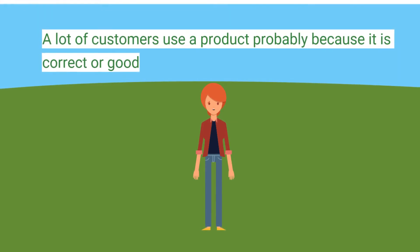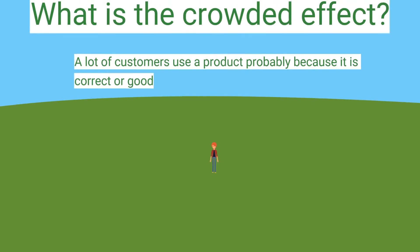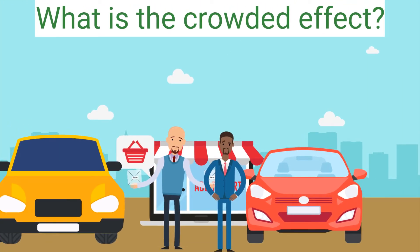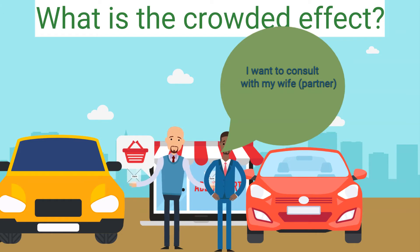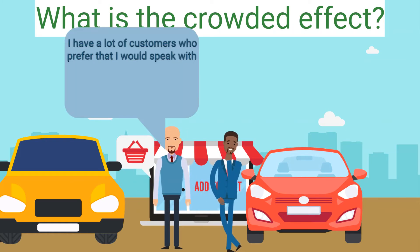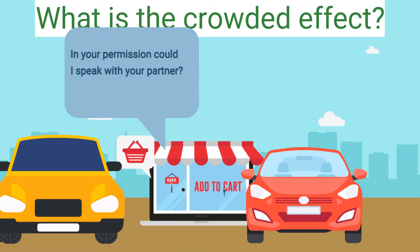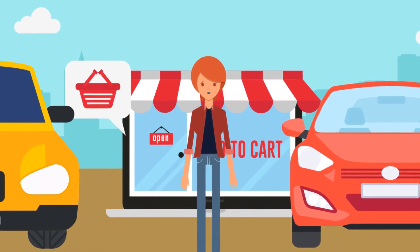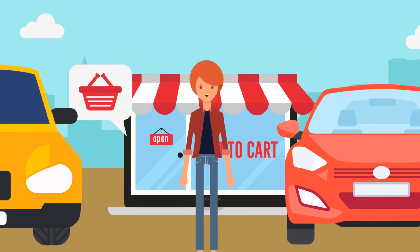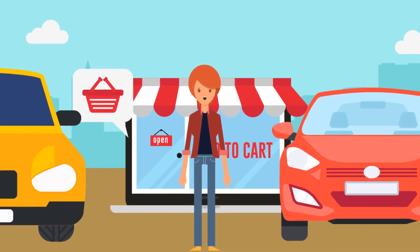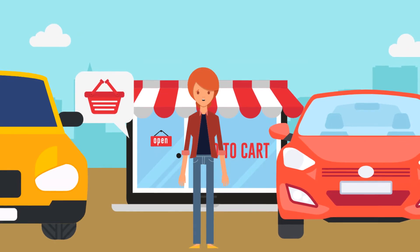Let's go back to the consult concern and use the Crowded Effect. If the customer wants to consult with his partner and they share the same problem, the Proportion tool may be irrelevant. This time you can say: I have a lot of customers who prefer that I speak with their partners because their partners ask questions they don't know how to answer. With your permission, could I speak with your partner? Be careful not to make the customer feel singled out — use 'a lot of customers' so he doesn't feel you are pointing at him.